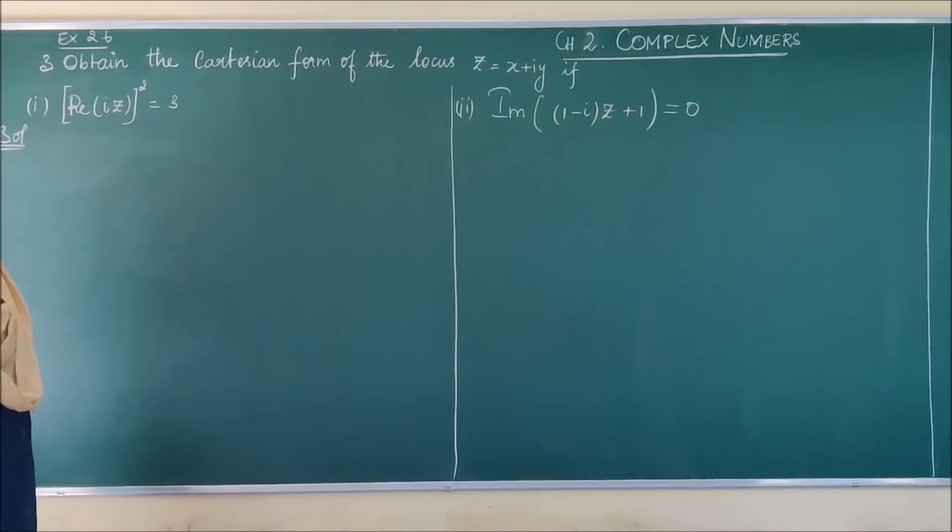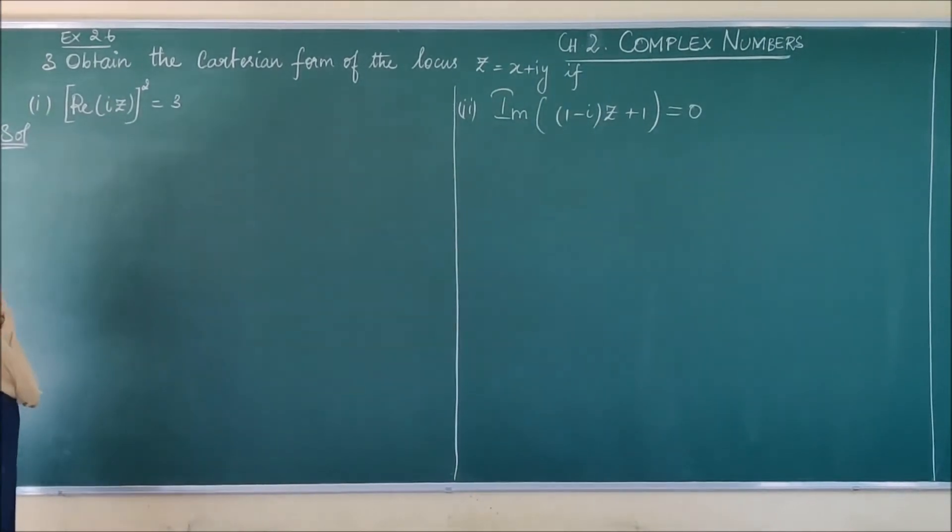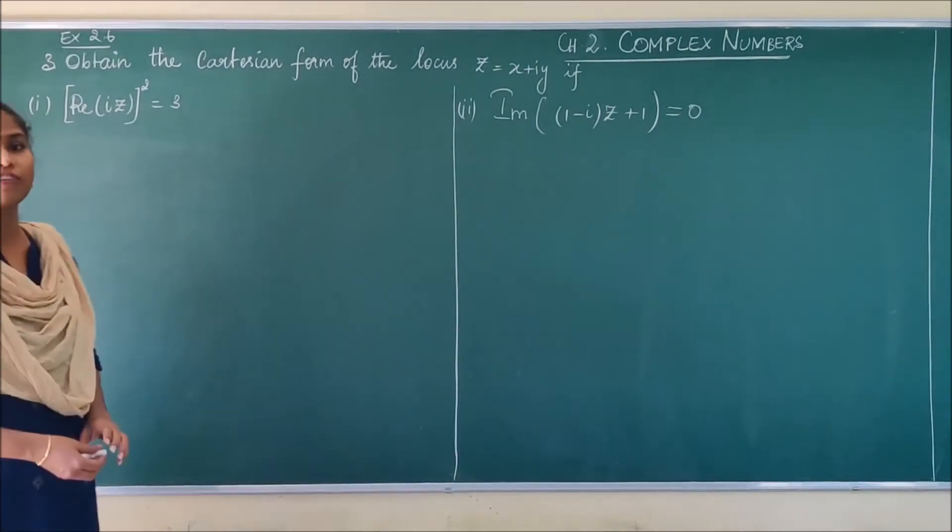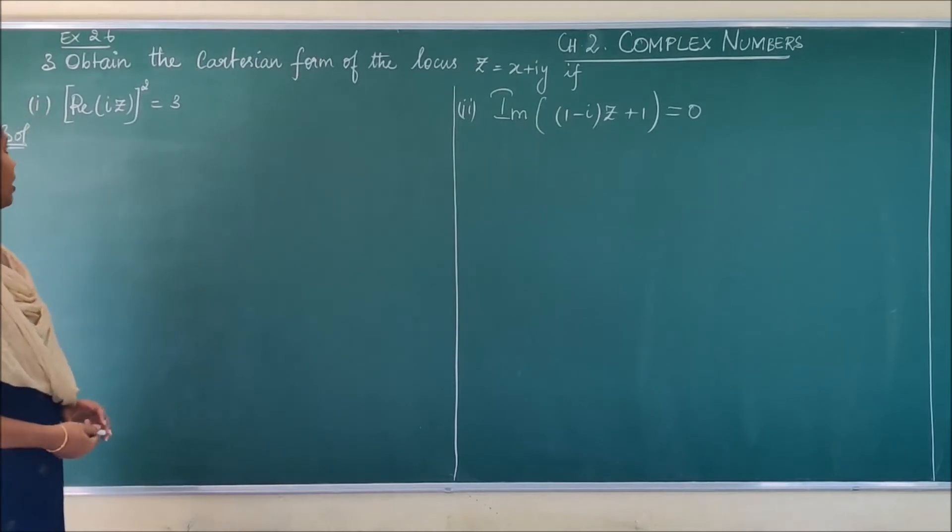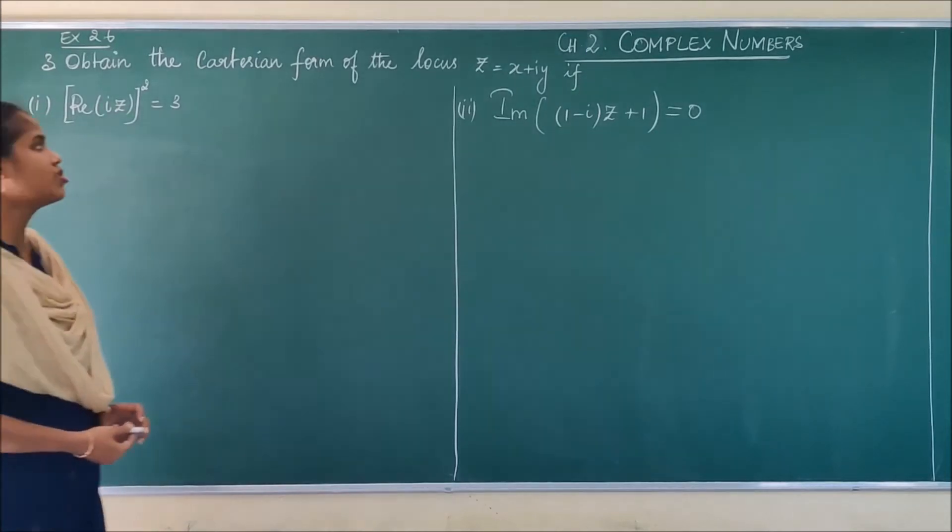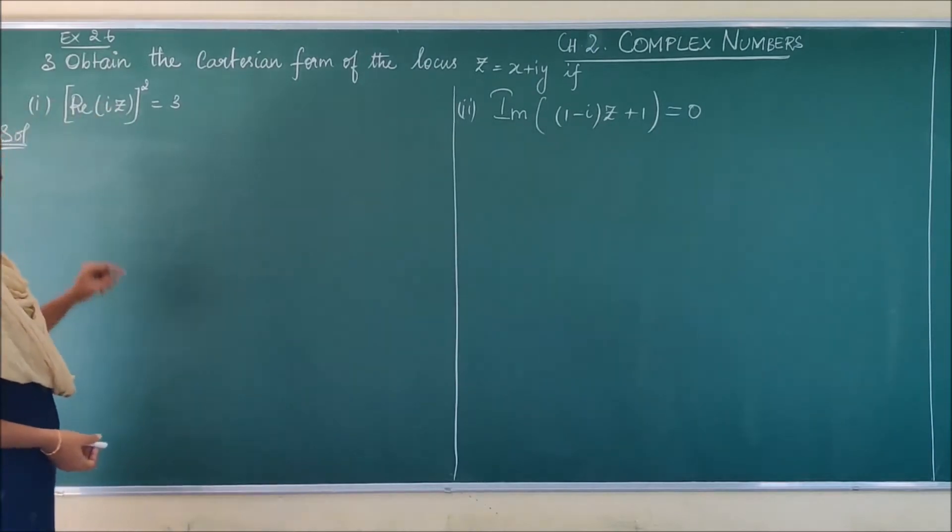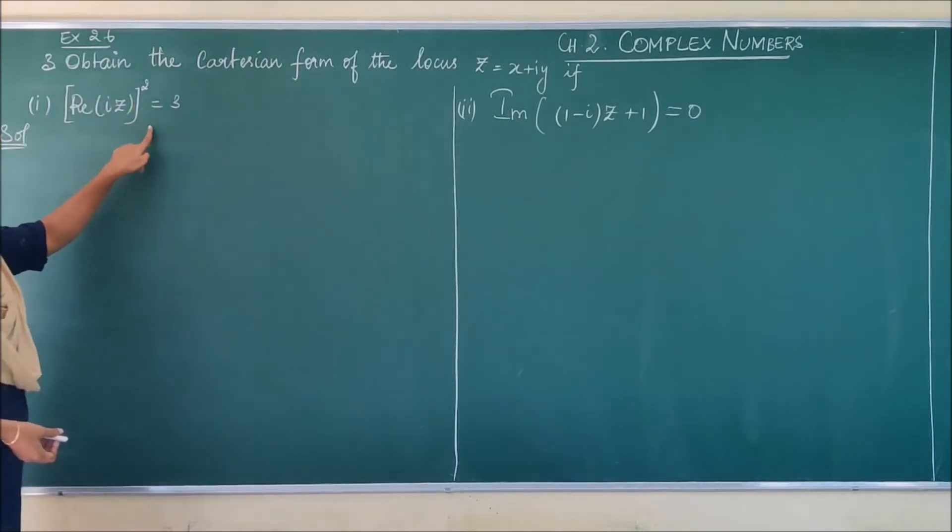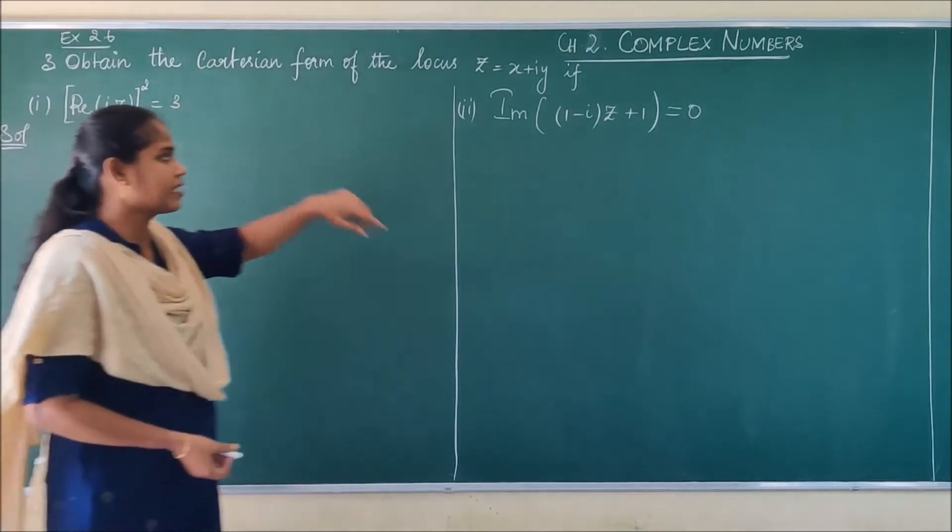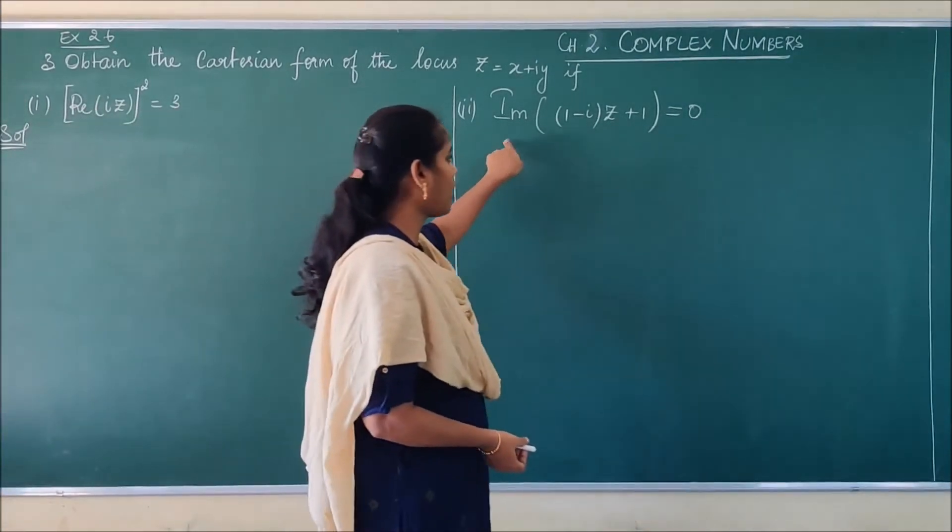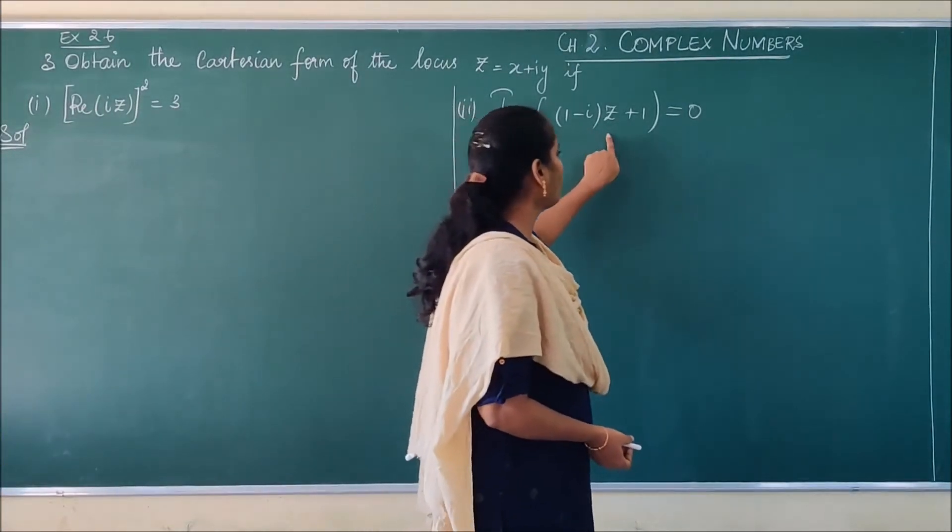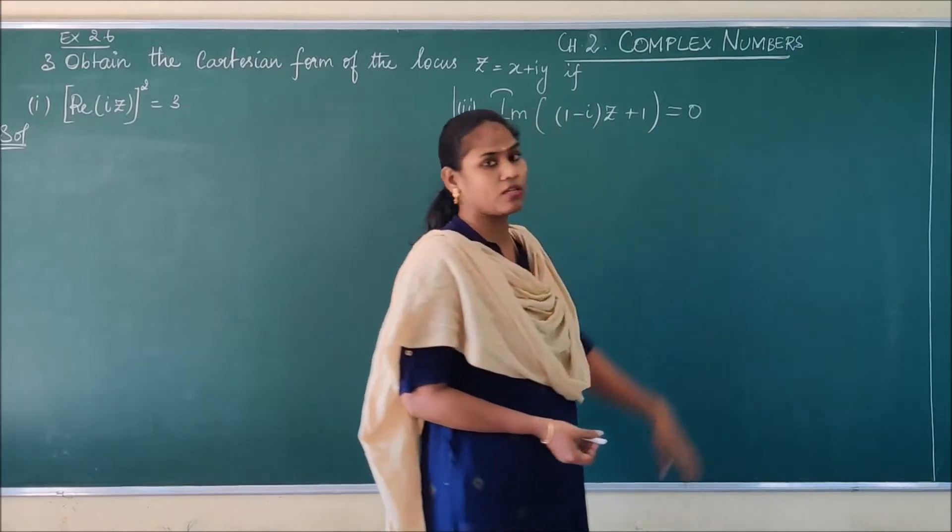Good morning students. Next we are going to see problem number 3 from exercise 2.6. Obtain the Cartesian form of the locus z equals x plus iy. The real part of iz whole square equals 3, and the second problem is imaginary part of (1 minus i) into (z plus 1) equals 0.